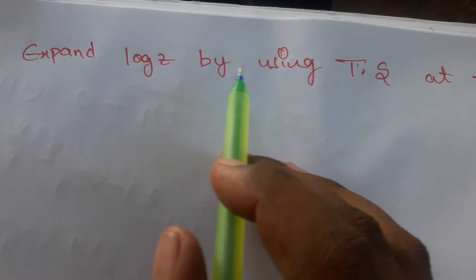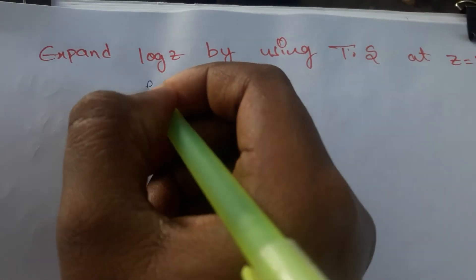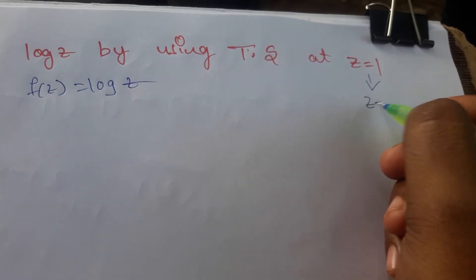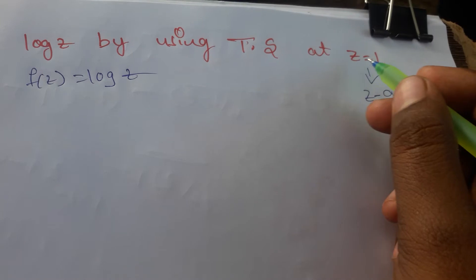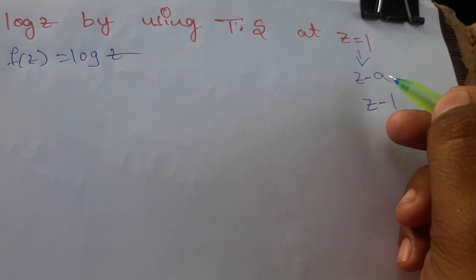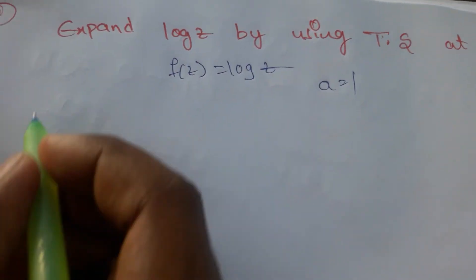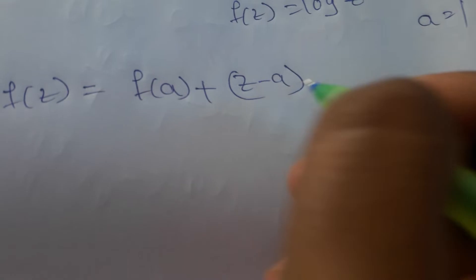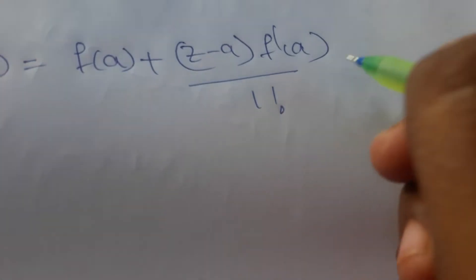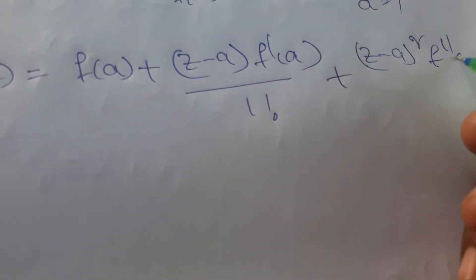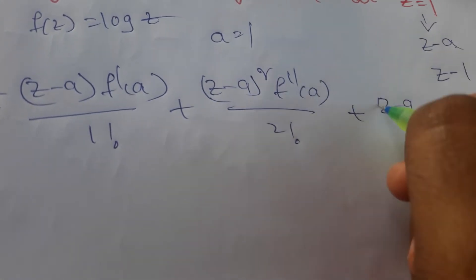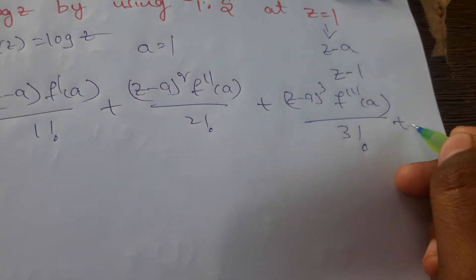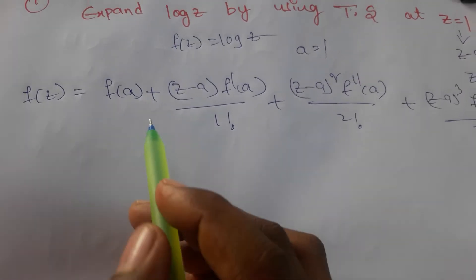The question is: expand log(z) using Taylor's series at z=1. So f(z) = log(z) and z=1, which means we write it in the form (z − a), so a=1. The Taylor series formula is: f(z) = f(a) + (z−a)·f'(a)/1! + (z−a)²·f''(a)/2! + and so on. We need to find f(a), f'(a), f''(a), and f'''(a).